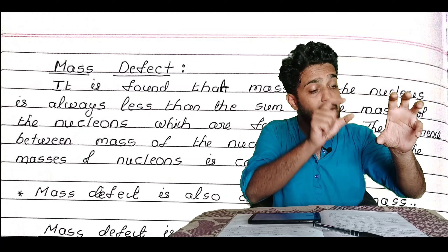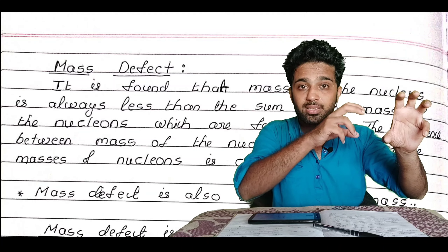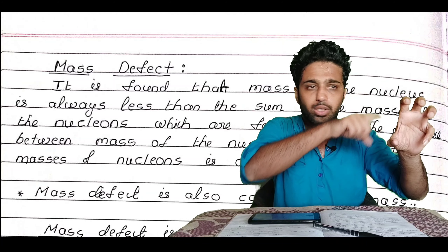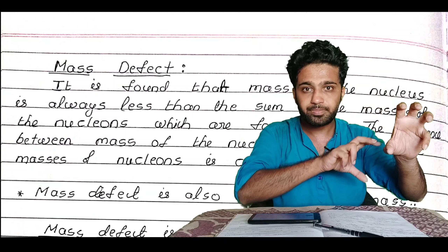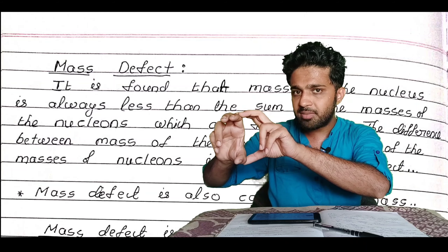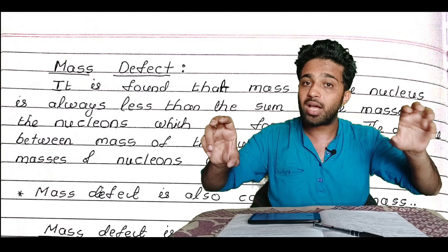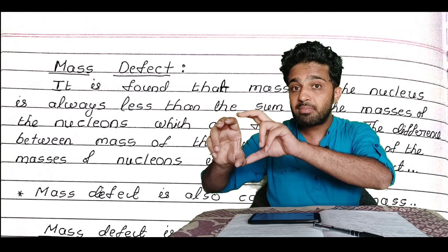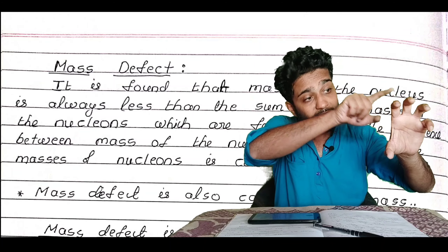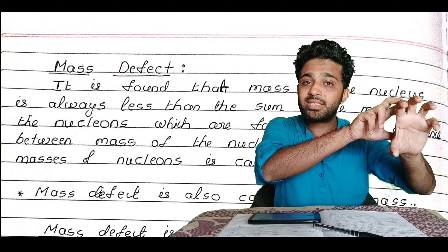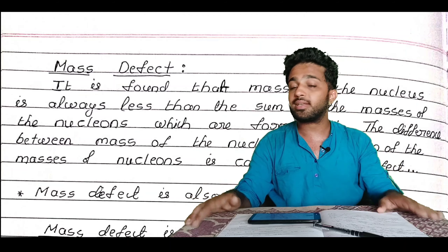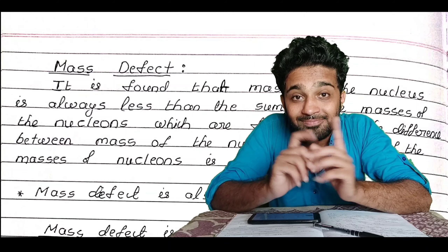We calculate the mass of each nucleon and add them. Then we find the actual mass of the nucleus. The nucleus is formed from protons and neutrons. We calculate the total mass of all nucleons forming the nucleus, and the actual measured mass of the nucleus is less. The difference between these two values is called the mass defect.